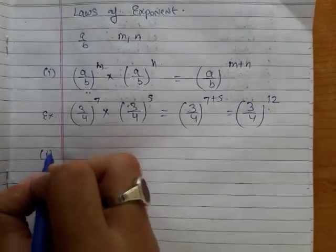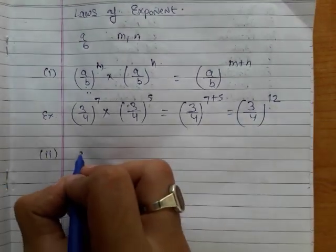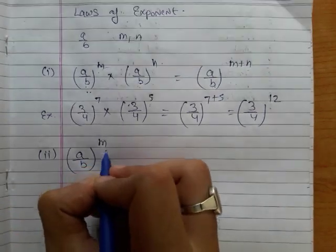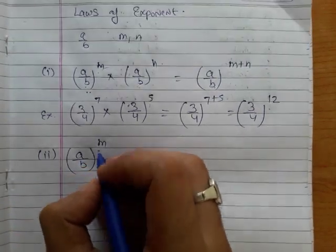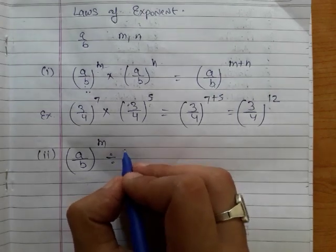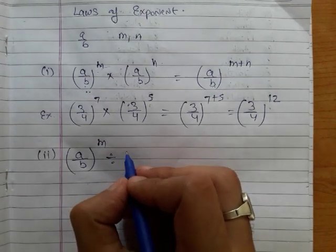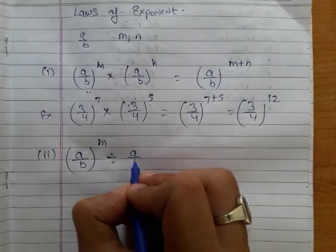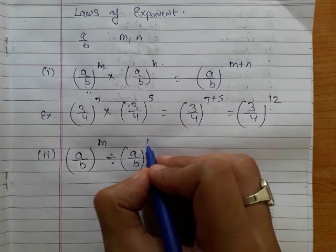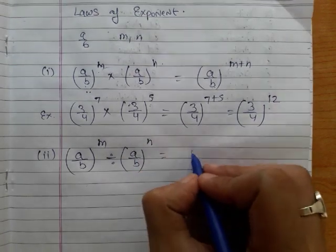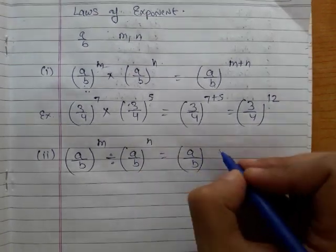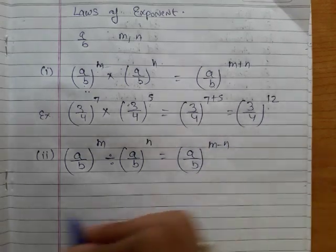The second law says that if there is a rational number a over b whose power is m, and this rational number is divided by the same rational number a over b whose power is n, then we can write a over b raised to the power m minus n.